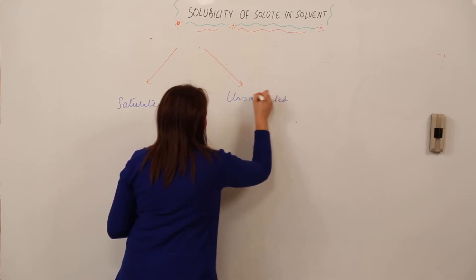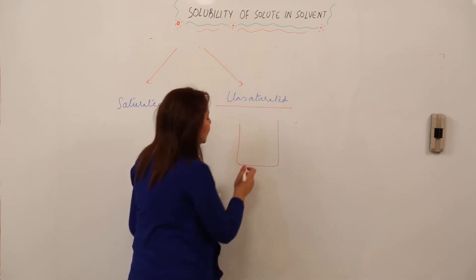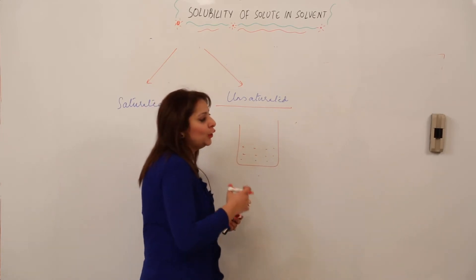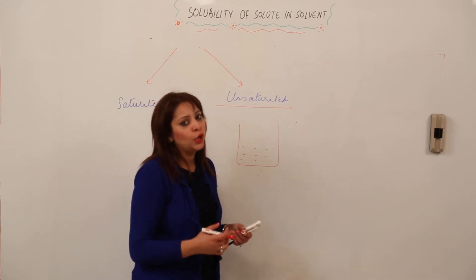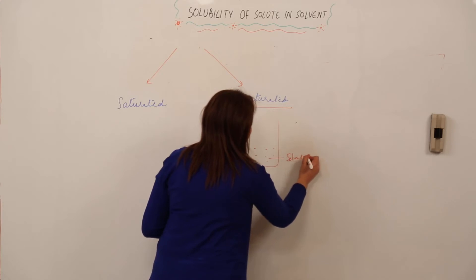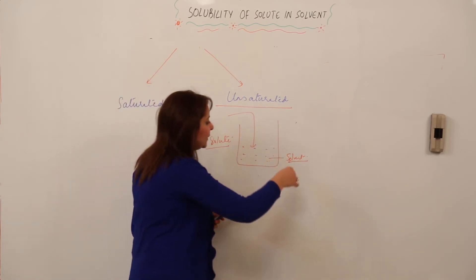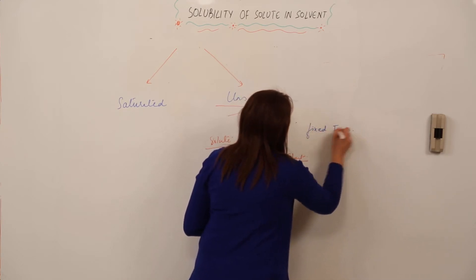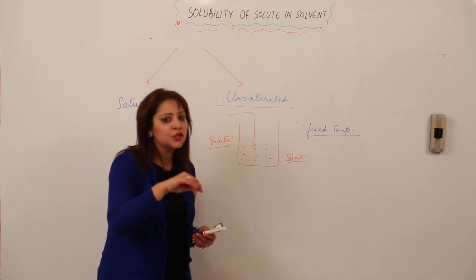Let me explain with an example. I've taken a flask containing a solvent — it need not always be water; there are many solvents like benzene, carbon disulfide, and others, though water is the universal solvent. I'm dissolving a solute into it at a fixed temperature, meaning I'm not altering the temperature. I'm stirring it and the solvent is dissolving the solute.